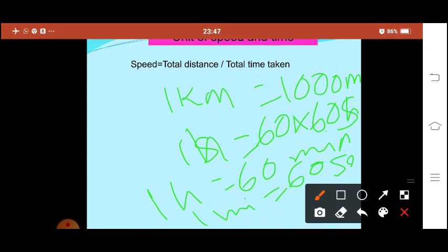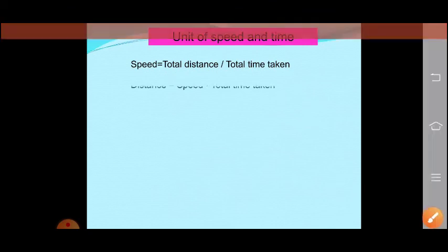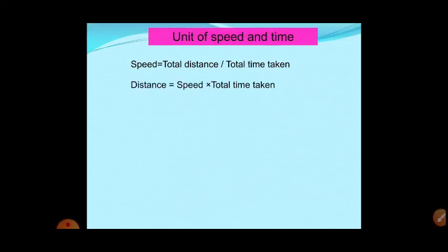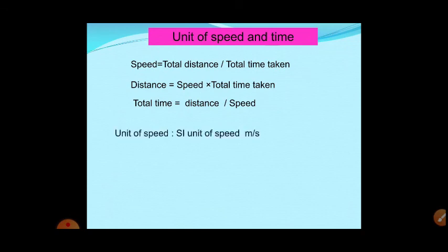We know speed = total distance / total time. From this we can find distance = speed × time, and time = distance / speed. These are the formulas used in this chapter. The SI unit of speed is metres per second, but we also use kilometres per hour, kilometres per minute, and kilometres per second.